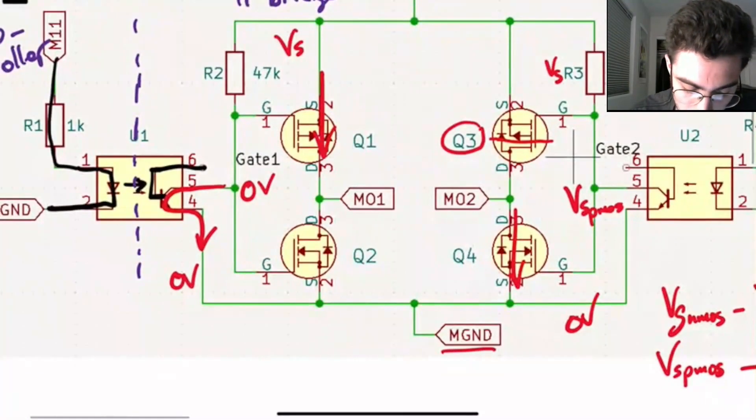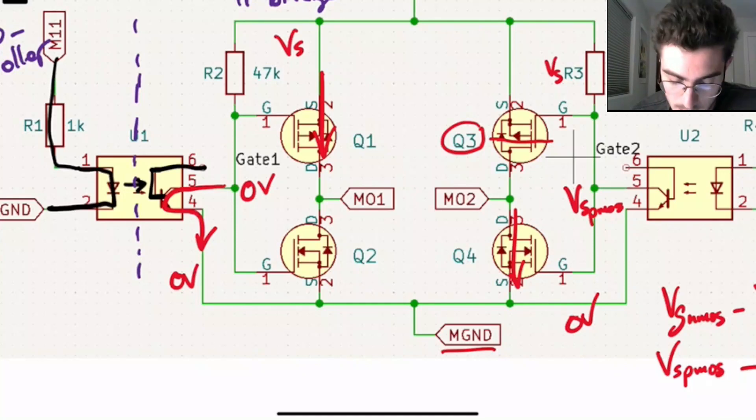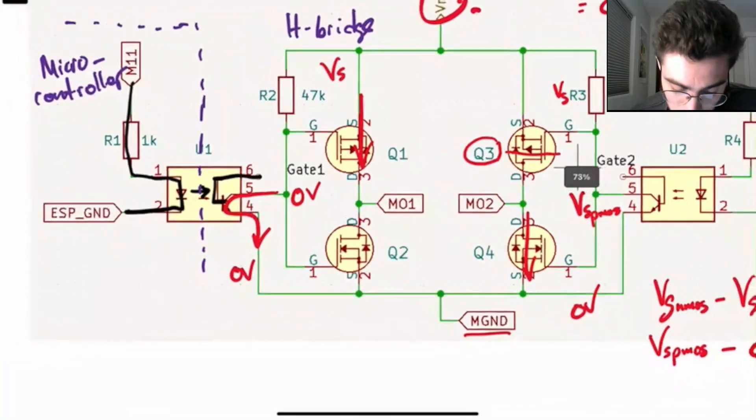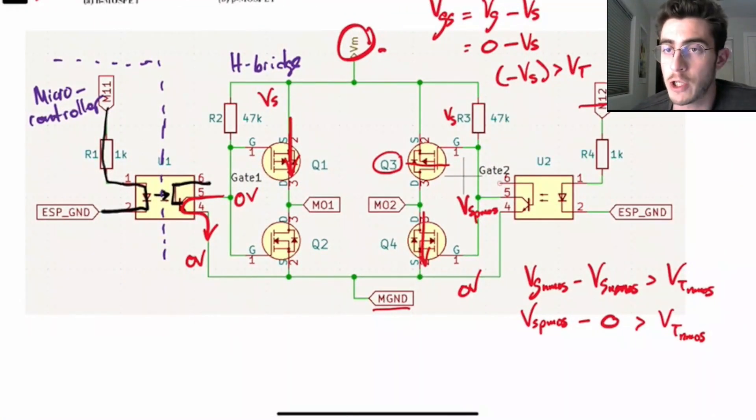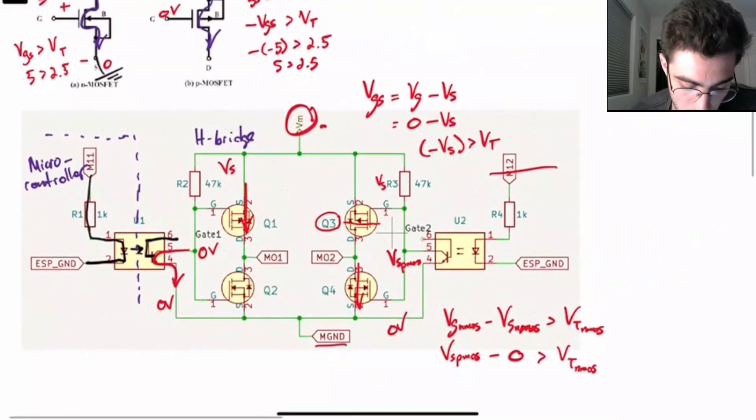So yeah, that's how you turn on either Q1 and Q4 at the same time, or Q3 and Q2 at the same time. And as we know from before, that'll give you both direction, directional control of your motor. And that's pretty much it.